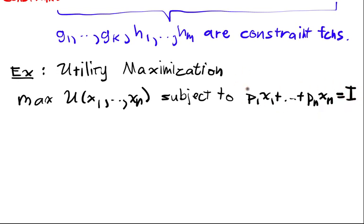So this would be an equality constraint, and this would be the income function, or the expenditure function. But not only that, we also want to have,